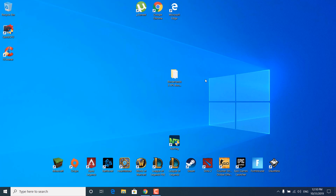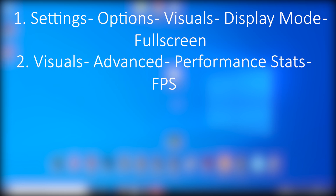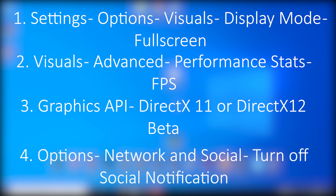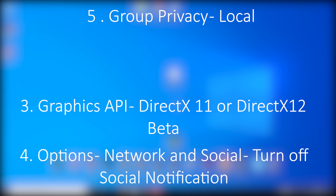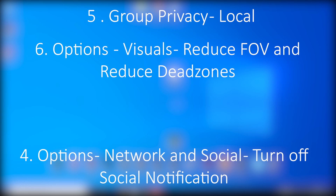Now open up the game so we can optimize some in-game settings. Go to Settings, then Options, Visuals, set Display Mode to Fullscreen. Go to Visual Advanced and turn on FPS in the Performance Stats settings. Change the Graphics API — try DirectX 11 or DirectX 12 Beta and see what works best for you. Go to Options, Network and Social, and turn off social notifications. Set group privacy to Local if you are playing alone. Finally, go to Options, Visuals, reduce the field of view to the minimum, then go to Control Settings and set all dead zones to the minimum.